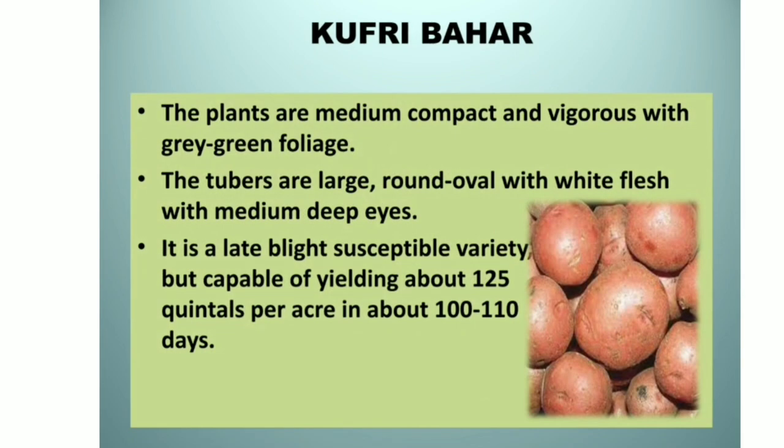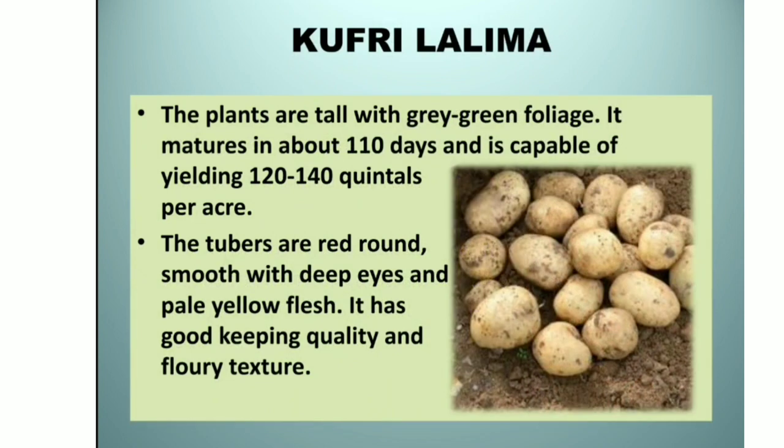Kufri Bahar: the plants are medium, compact and vigorous with gray-green foliage. The tubers are large, round-oval with white flesh and medium deep eyes. It is a late blight susceptible variety but is capable of yielding about 125 quintals per acre in about 100 to 110 days.